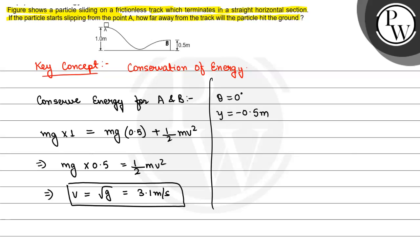Using the equation for vertical motion, we will have minus 0.5 equals U sin theta times T minus half GT squared.